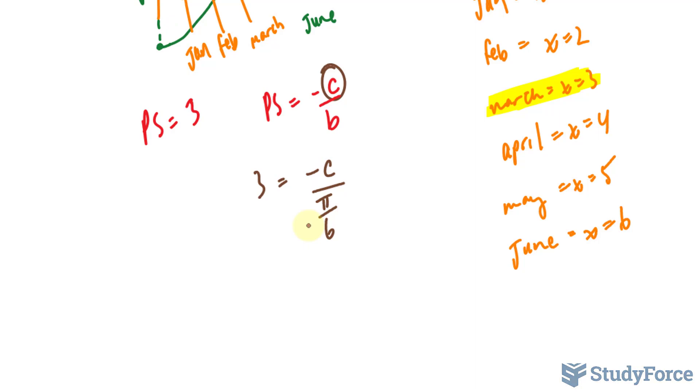To solve for c, I multiply both sides by π/6. 3 times π/6 = -c. This gives us 3π/6, and that's negative, and it reduces down to -π/2. This means that our final equation should look like this.